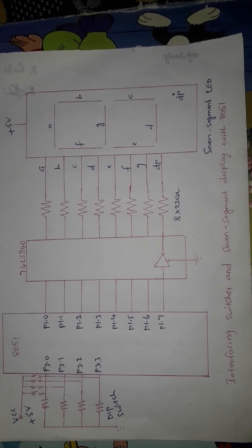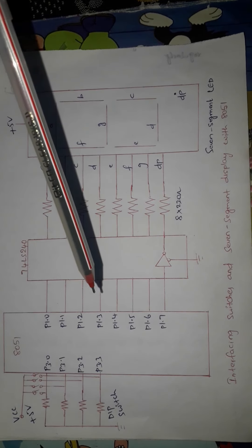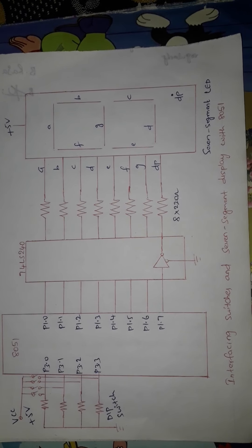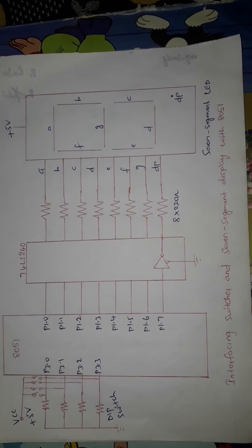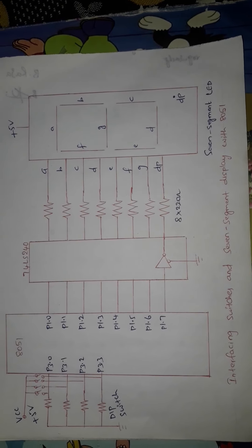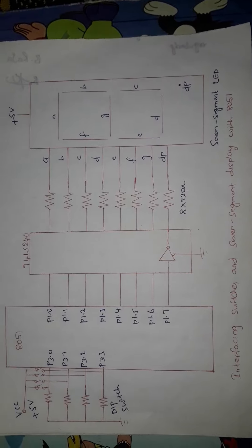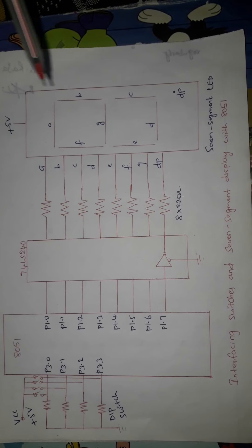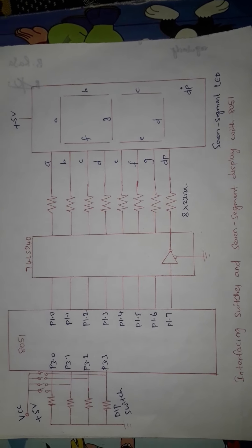Port 1 of the 8051 is not a multi-functional port. The 8051 has four ports: 0, 1, 2, and 3. All ports are multi-functional and have different other functions, except port 1, which only acts as an I/O port. Port 0 can be used for multiplexed address/data, port 2 is used for address, and port 3 is used for different control signals. Port 1 is used only for I/O operations, so a single seven segment LED is connected to port 1.